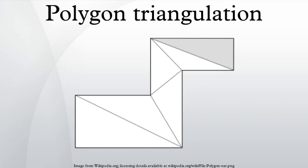In computational geometry, polygon triangulation is the decomposition of a polygonal area P into a set of triangles, that is, finding a set of triangles with pairwise non-intersecting interiors whose union is P.